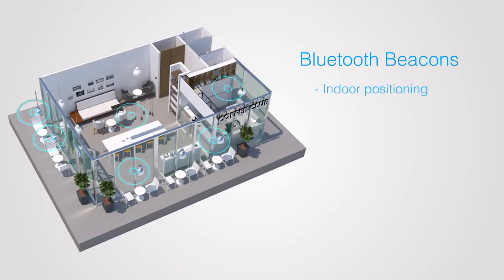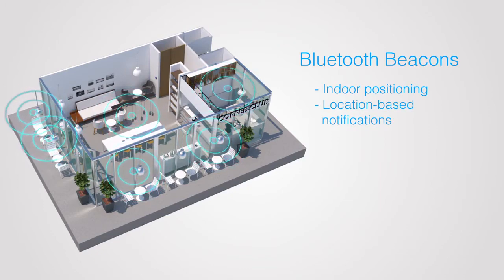We can also send health and status notifications of the light back to the smartphone app using Zigbee reporting and Bluetooth beacons. Bluetooth beacons can also be used for indoor positioning as well as location-based notifications such as advertisements. All these functions occurred without having to connect to an IoT gateway or hub, using Silicon Labs multi-protocol connectivity.